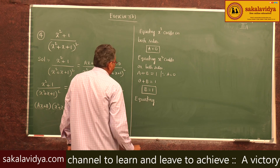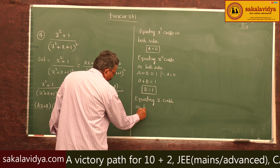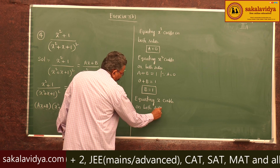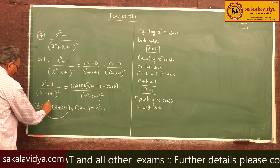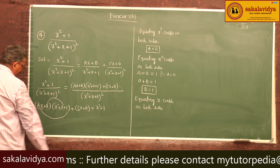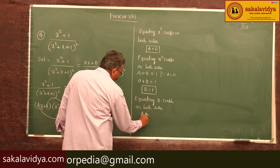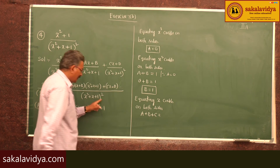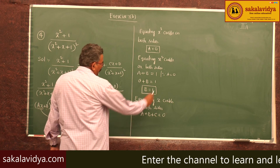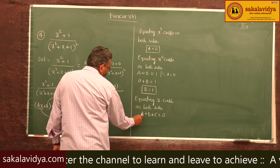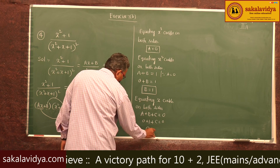Equating x coefficients on both sides: A + B + C = 0. Substituting A = 0 and B = 1, we get 0 + 1 + C = 0, so C = -1.